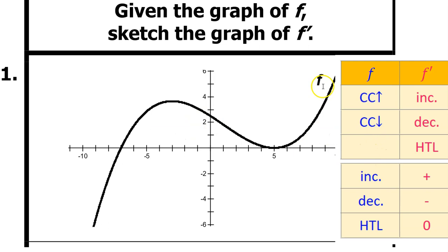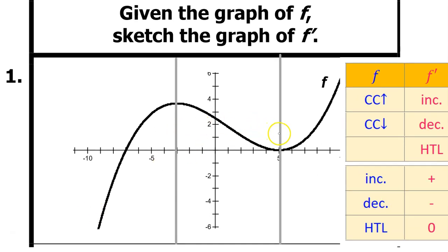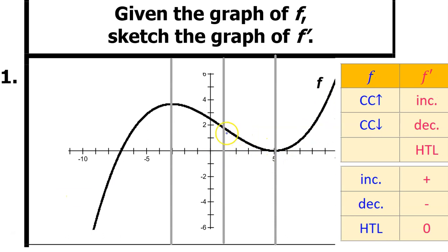Since we are given the graph of f, I'm going to start with this column of our chart. Let's divide f up into intervals based on whether f is concave up, concave down, increasing, or decreasing. Let's start with intervals of increasing versus decreasing — put in some vertical lines to show where f changes direction. For example, f starts off increasing, then it's decreasing, then it's increasing again. Next, we identify intervals where f is concave up or concave down. I'm estimating the point of inflection is at x equals 1, where f changes from concave down to concave up.